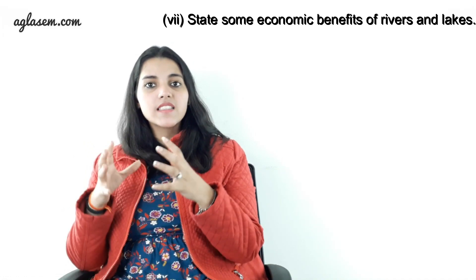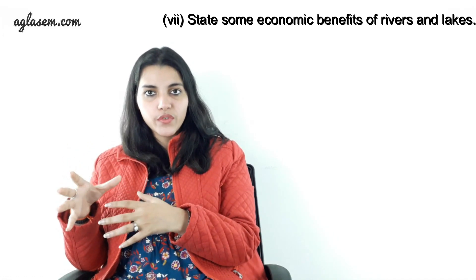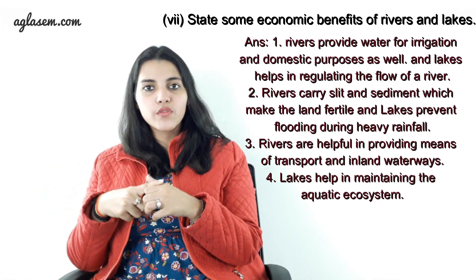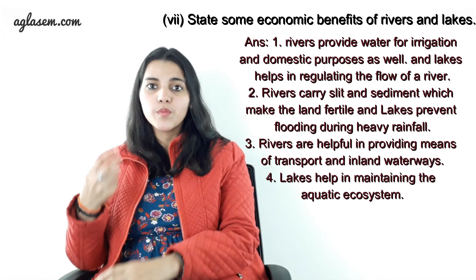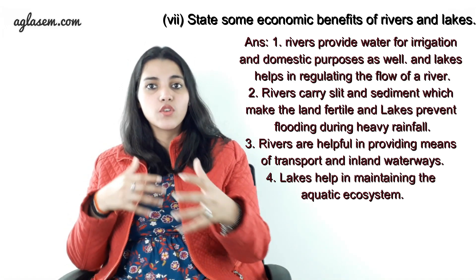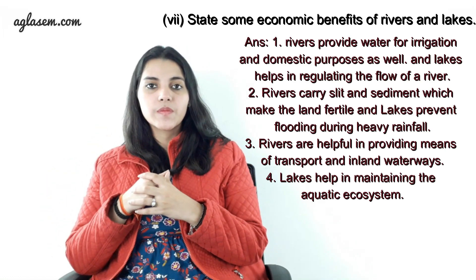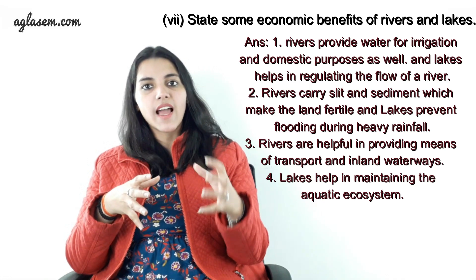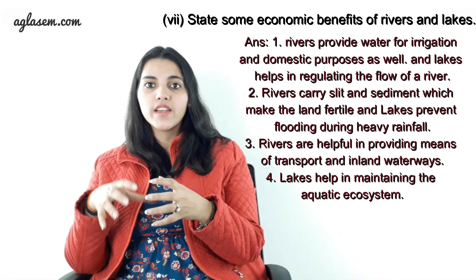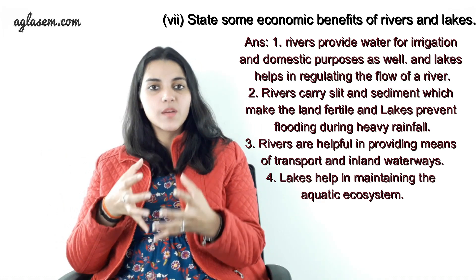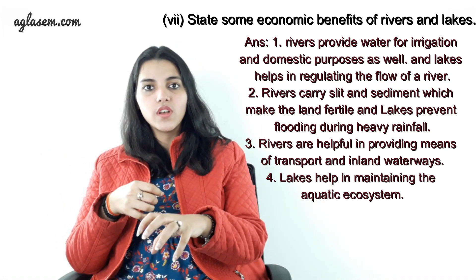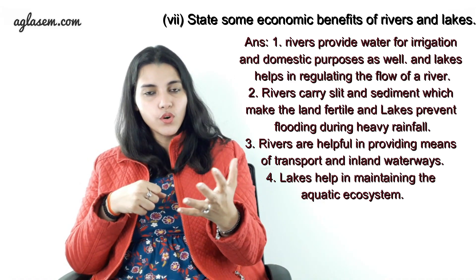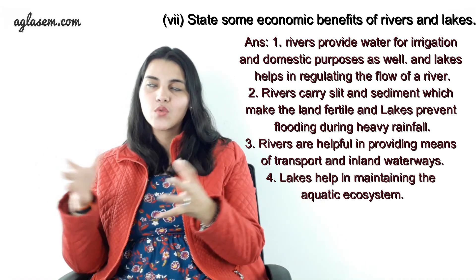Next: State some economic benefits of rivers and lakes. Number 1: Rivers provide water for irrigation and domestic purposes, and lakes help in regulating the flow of a river. Number 2: Rivers carry silt and sediment which makes the land fertile, and lakes prevent flooding during heavy rainfall. Number 3: Rivers are helpful in providing means of transport and inland waterways. Number 4: Lakes help in maintaining the aquatic ecosystem.